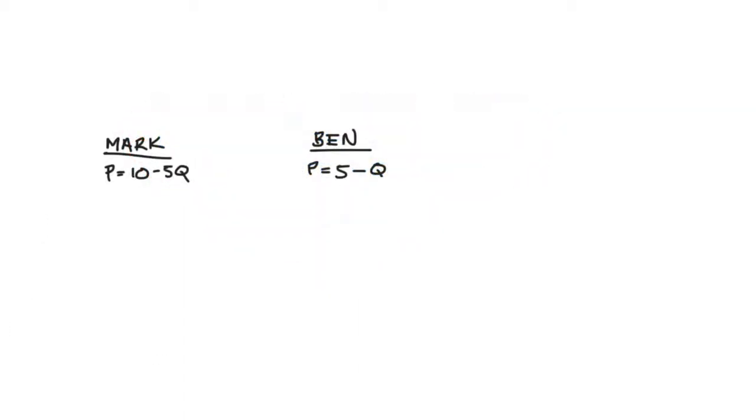In my example I have two hypothetical individuals, Mark and Ben, whose demand curves are represented by the equations p equals 10 minus 5q and p equals 5 minus q respectively. In my example the market itself consists of just Mark and Ben, so market is Mark plus Ben.